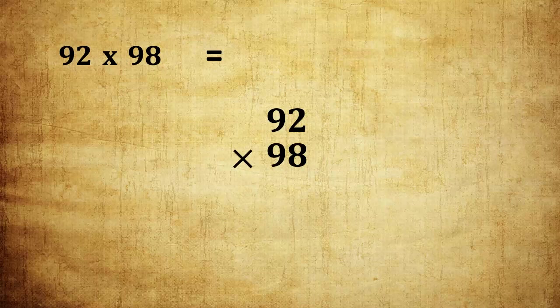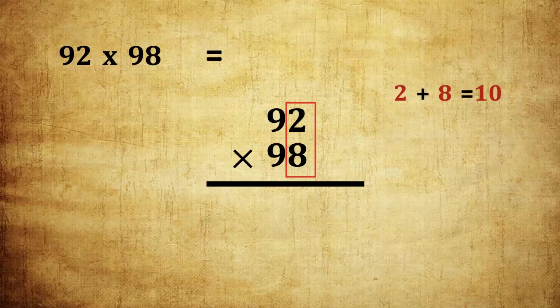Interesting, right? Next one is 92 into 98. Friends, check the units place digits. 92 into 98. 2 and 8. 2 plus 8 is 10.